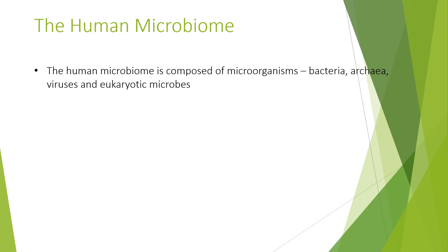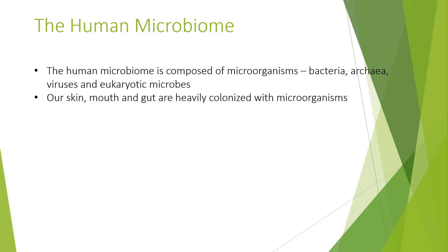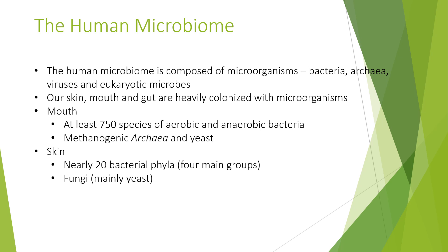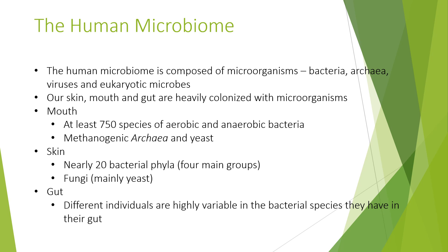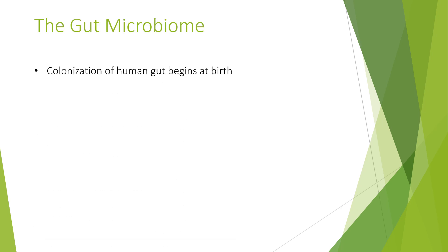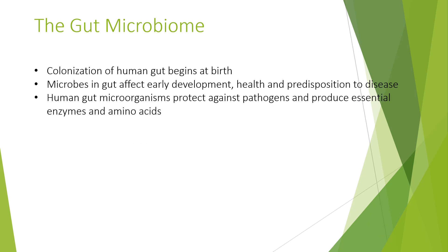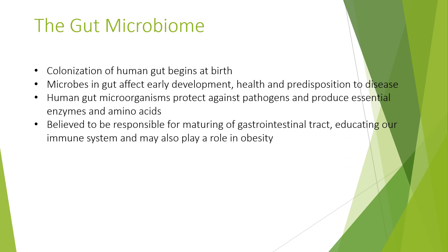The human microbiome is composed of microorganisms such as bacteria, archaea, viruses, and eukaryotic microbes. Our skin, mouth, and gut are heavily colonised with microorganisms. The mouth contains at least 750 species of aerobic and anaerobic bacteria, methanogenic archaea, and yeast. The skin has nearly 20 bacterial phyla with four main groups, plus fungi mainly as yeast. Different individuals are highly variable in the bacterial species they have in their gut. Colonisation of the human gut begins at birth. Microbes in the gut affect early development, health, and predisposition to disease. Human gut microorganisms protect against pathogens and produce essential enzymes and amino acids. This is believed to be responsible for maturation of the gastrointestinal tract, educating our immune system, and may also play a role in obesity.